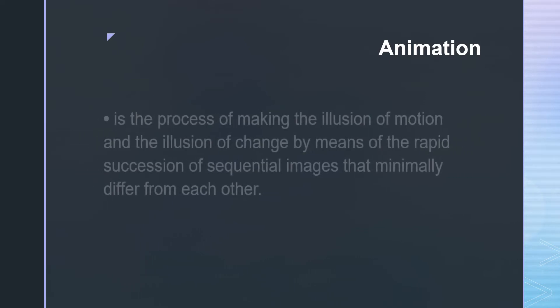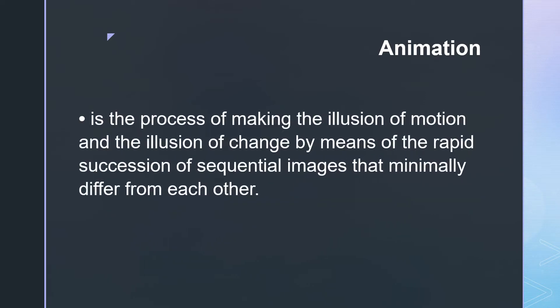Next is animation. Animation is the process of making the illusion of motion and the illusion of change by means of the rapid succession of sequential images that minimally differ from each other. These are applied to text or objects in your presentation that give visual effects including movement. Animation is useful especially when we have important points to focus on. We can use it to control the flow of information and to increase viewer interest in your presentation.